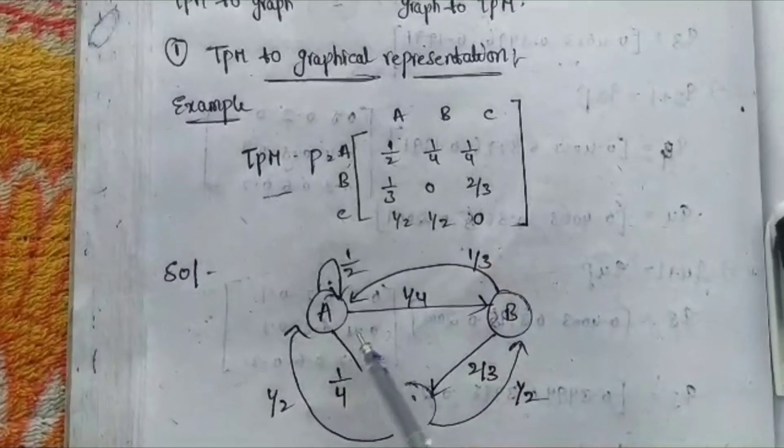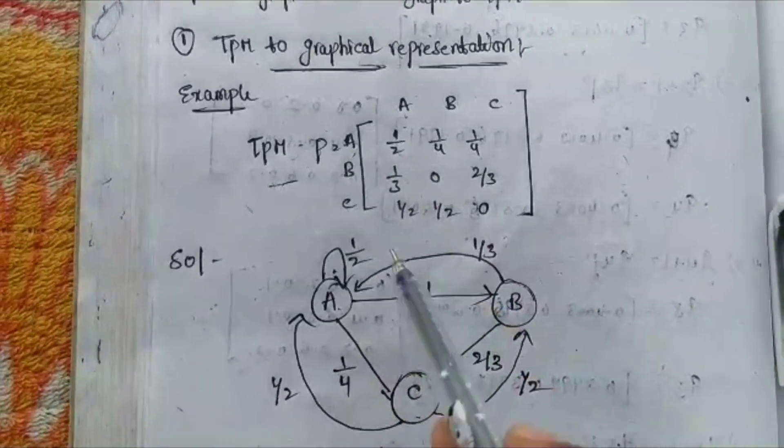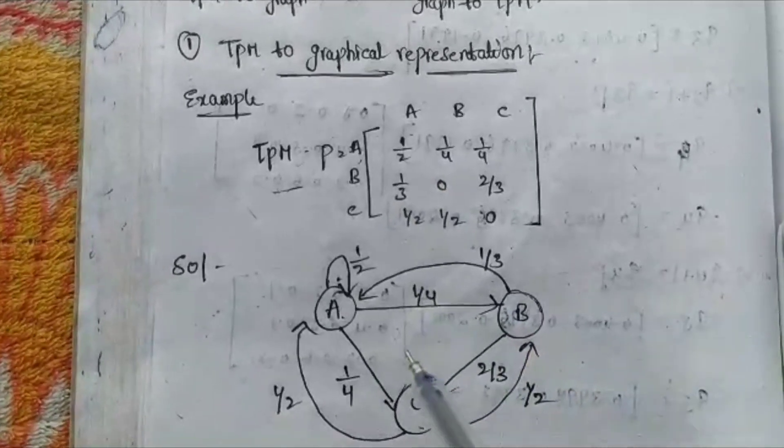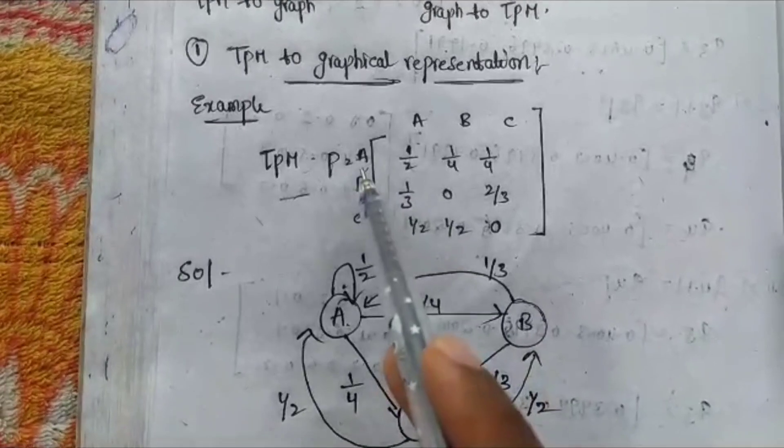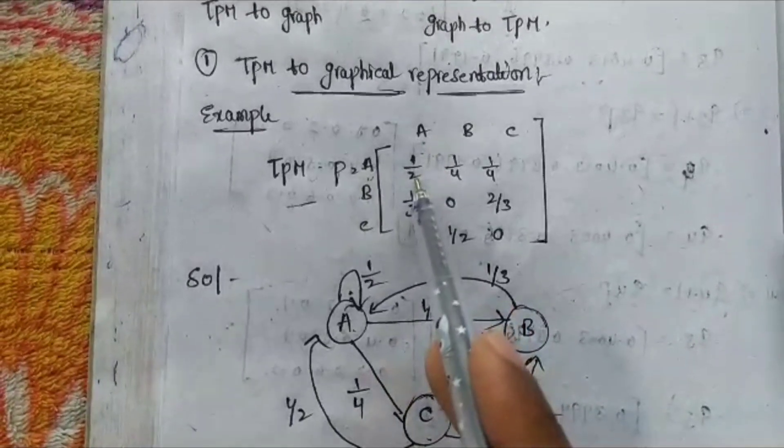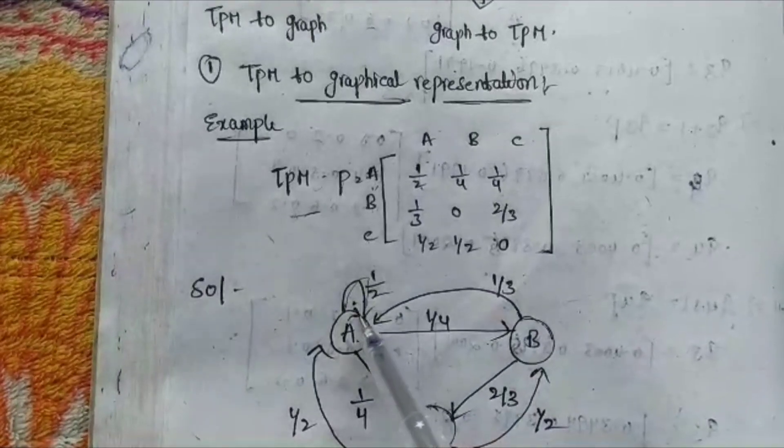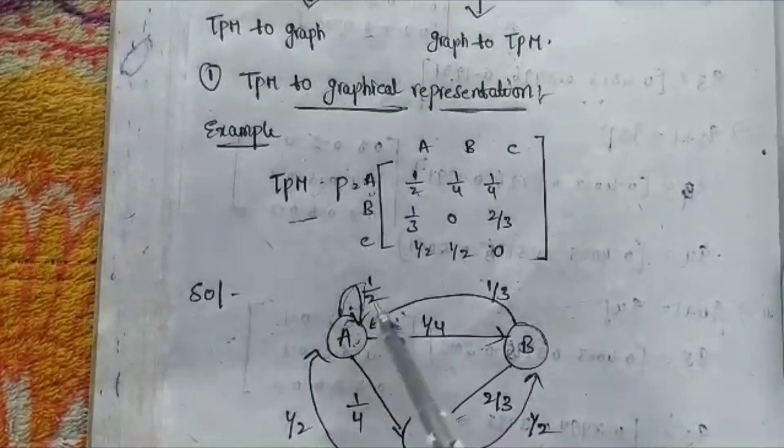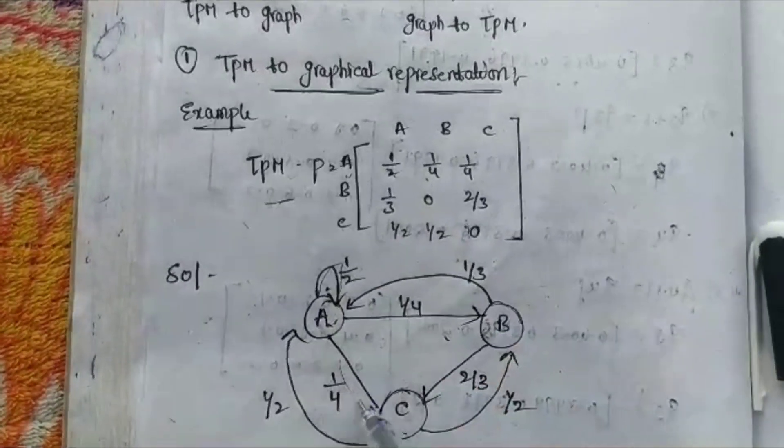This TPM is converted into graphical representation. First, we take states A, B, C, and using the matrix elements we draw the graph. From A to A, the value is 1/2, which is a self-loop. From A to B, the value is 1/4, and A to C is 1/4.